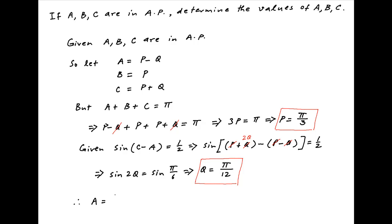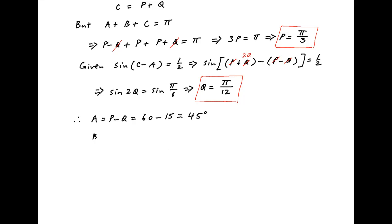Angle A is equal to P minus Q, which is π upon 3 minus π upon 12, or 60 minus 15, which is 45 degrees.